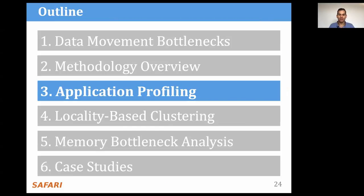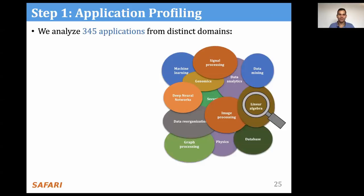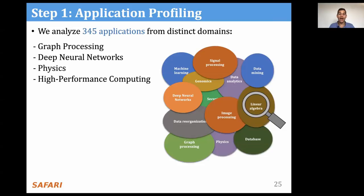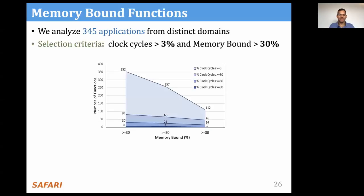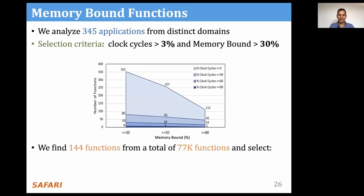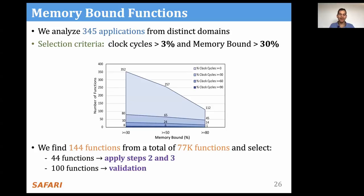We apply step one of our methodology over a large set of applications. In this work, we analyze 345 applications from different domains including graph processing, deep neural networks, physics, high-performance computing, genomics, and many more. From these applications, we select functions that take at least 3% of the total clock cycles and have a memory-bound measure larger than 30%. We find 144 functions from a total of 77,000 functions, selecting 44 functions to apply steps two and three of our methodology, and 100 functions to validate our workload methodology.